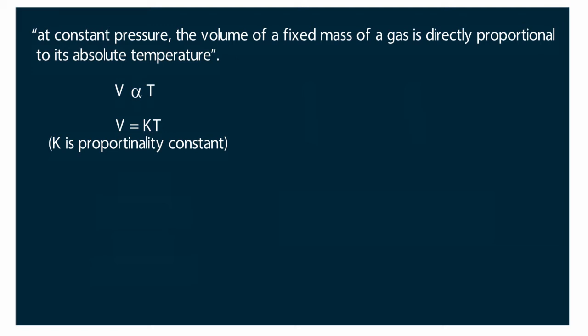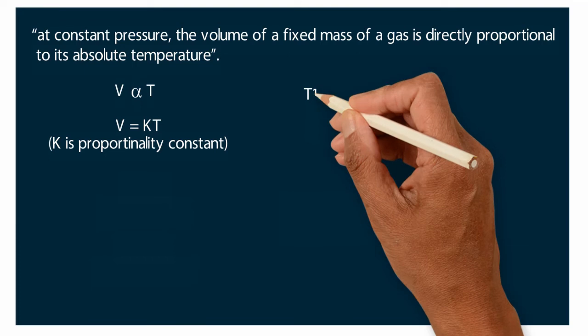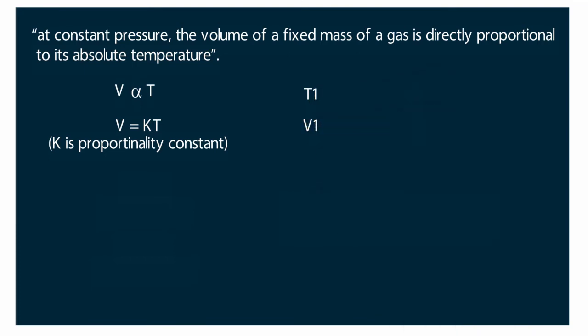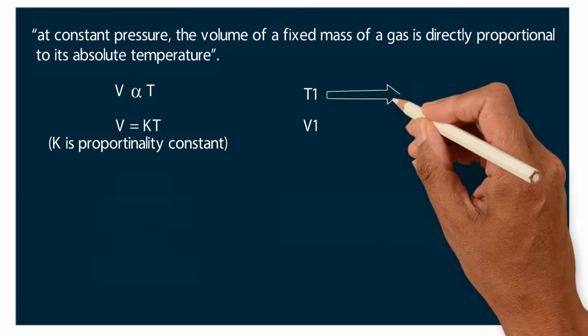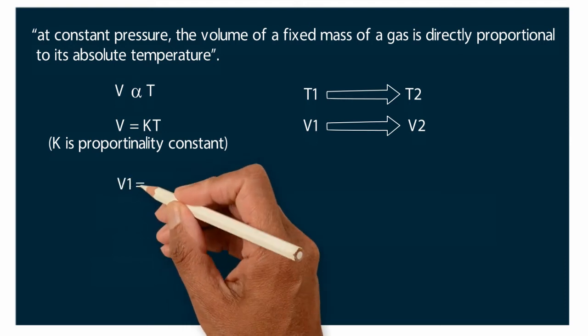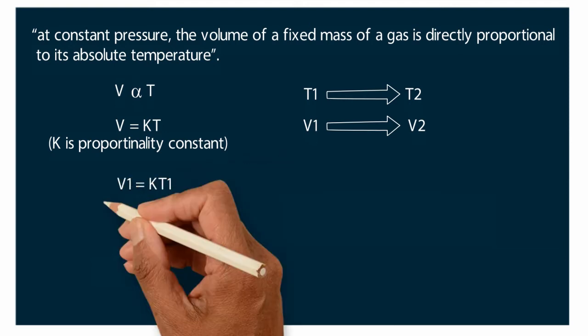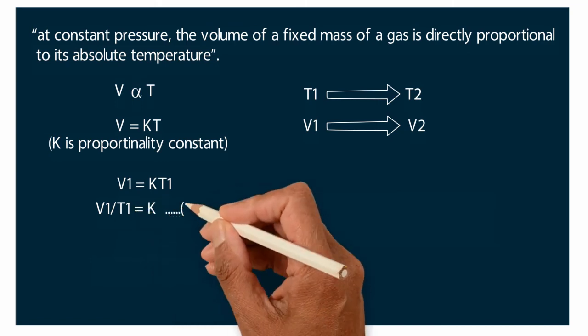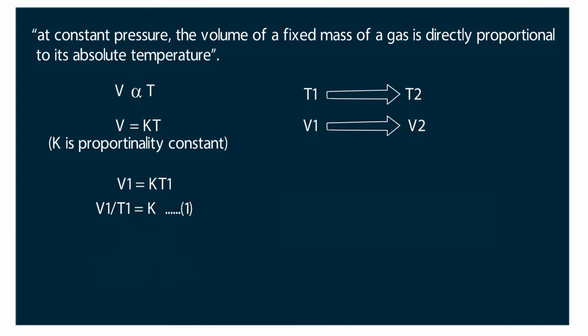Let us consider a given mass of gas G. At temperature T1 and volume V1 at same pressure, temperature of gas is rise to T2 then volume increases to V2. According to Charles law, V1 is equal to K into T1. V1 by T1 is equal to K. Consider this as first equation.